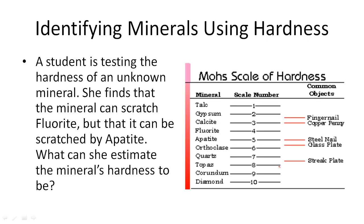So if a student was testing the hardness of an unknown mineral and finds that the mineral can scratch fluorite and can be scratched by apatite, then she can estimate that the hardness of this mineral is going to be somewhere in the middle here, so it's going to be about a 4.5. Because it can scratch fluorite, it has to be harder than fluorite but softer than apatite.